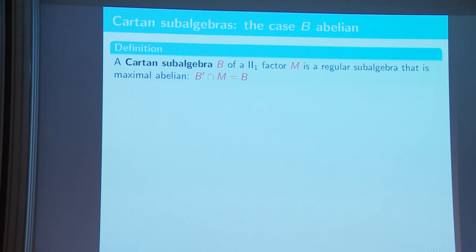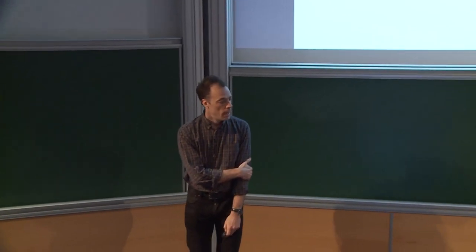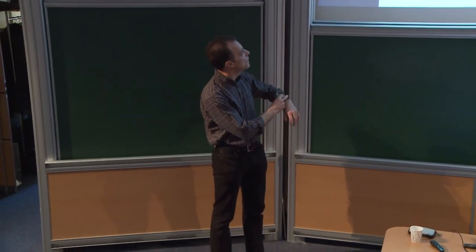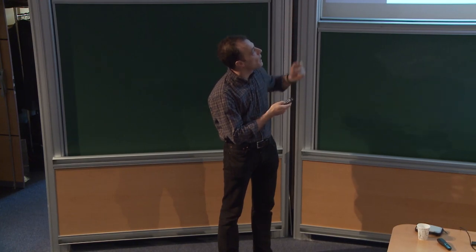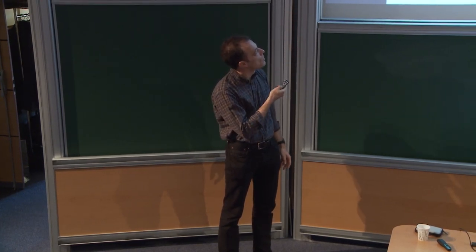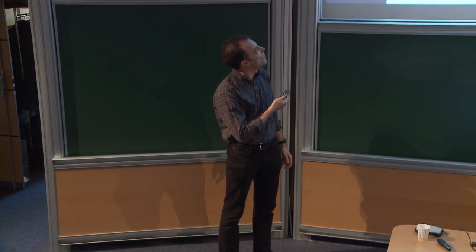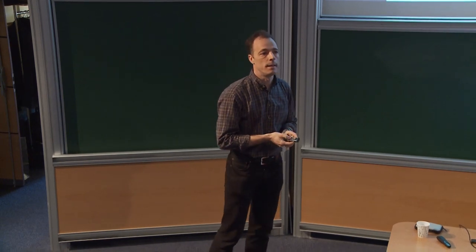In the case where B is abelian, this notion amounts to what is called a Cartan sub-algebra. A Cartan sub-algebra B of a II₁ factor is such a regular sub-algebra satisfying the relative commutant condition, with B abelian, meaning the relative commutant of B is just B itself. Why is it natural to look at Cartan sub-algebras in II₁ factors? Because by the work of Feldman and Moore, one can actually realize the II₁ factor as the algebra associated with some other data — namely from an equivalence relation.